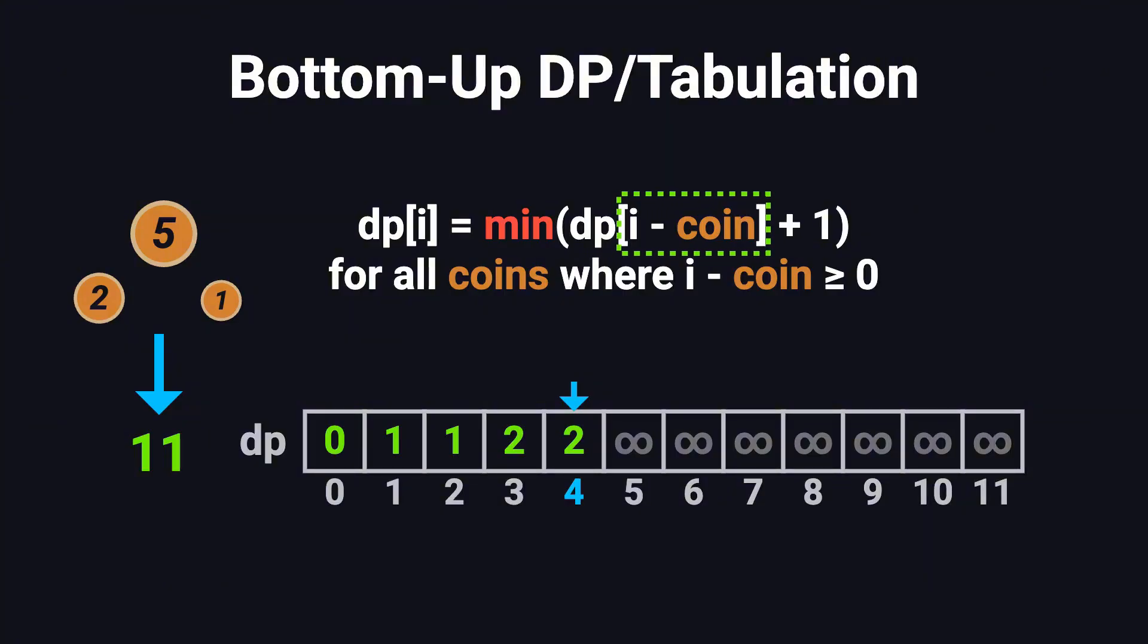Then, we ask, what's the minimum number of coins needed to make up that remaining amount? That's dp[i minus coin]. And since we just used one more coin, we add one to it. So the formula is: dp[i] equals the minimum of dp[i minus coin] plus 1 for all coins where i minus coin is greater than or equal to 0. We try this for every coin and take the smallest result. That becomes the answer for dp[i].